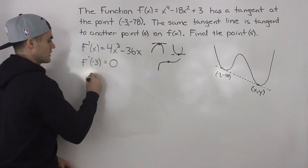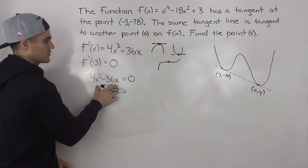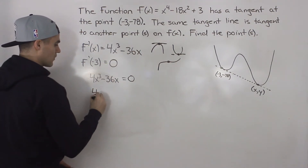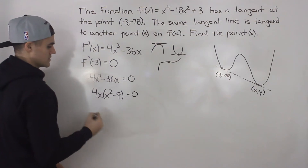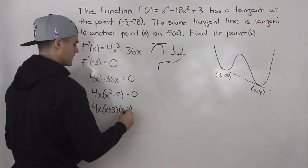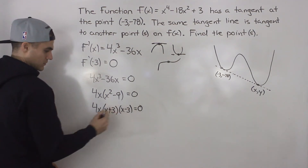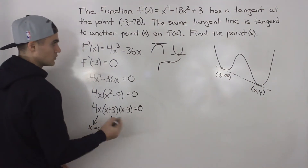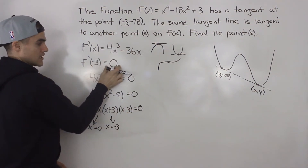To find another point with that same tangent line, we take the derivative 4x³ - 36x and set it equal to 0. We can factor out 4x, leaving x² - 9 = 0. Then x² - 9 factors into (x + 3)(x - 3). So the x values where the derivative equals 0 are x = 0, x = -3 (which we already know), and x = 3.